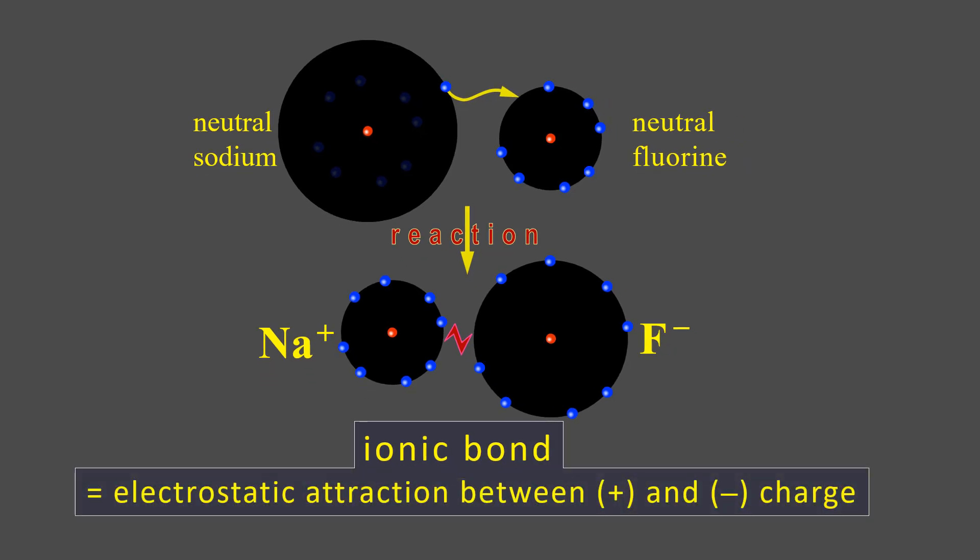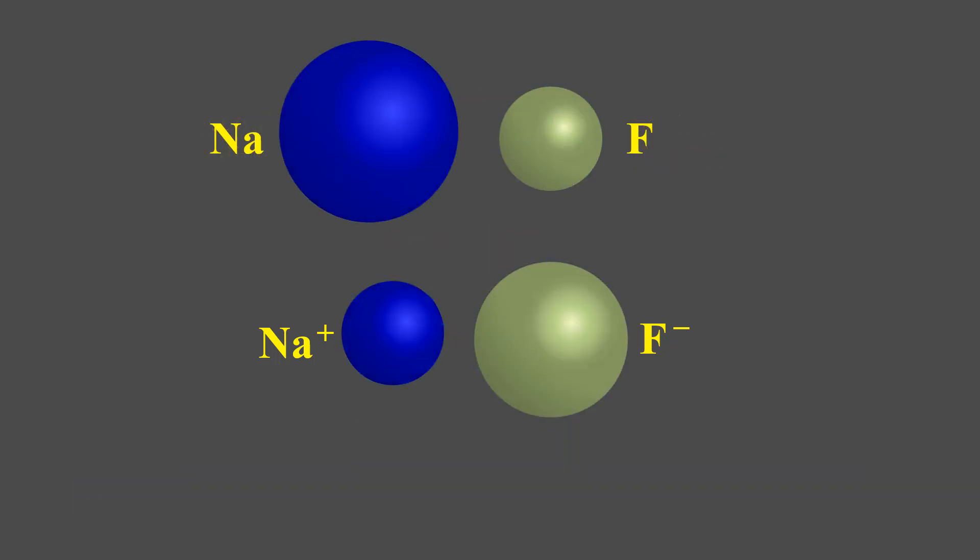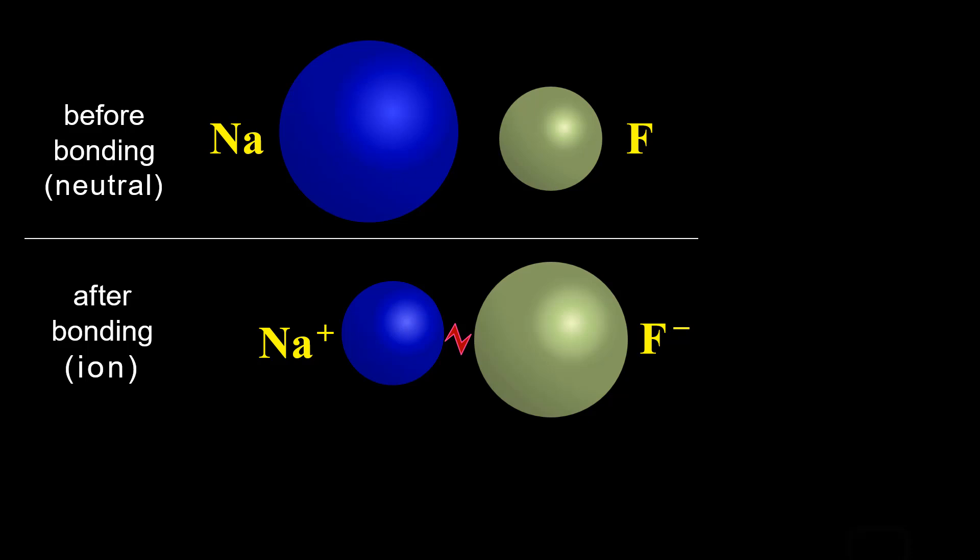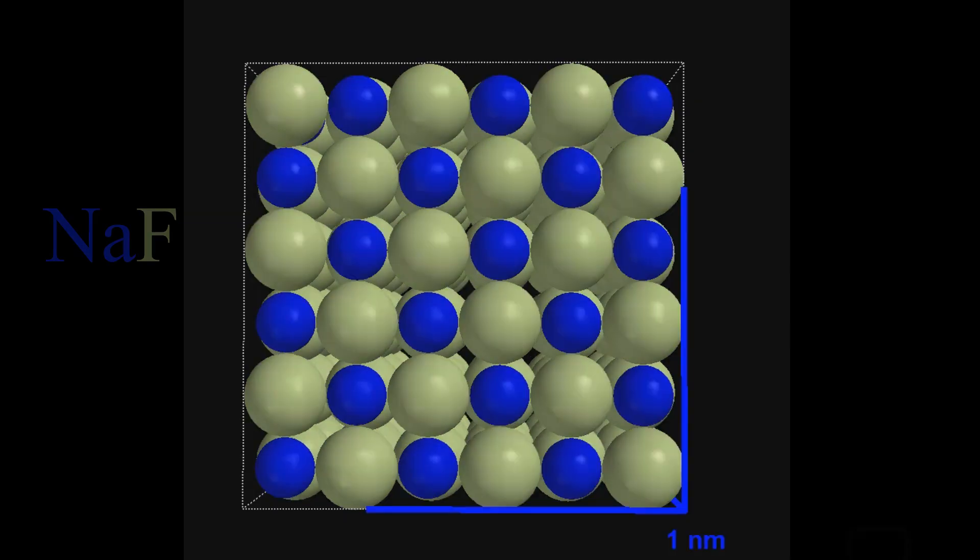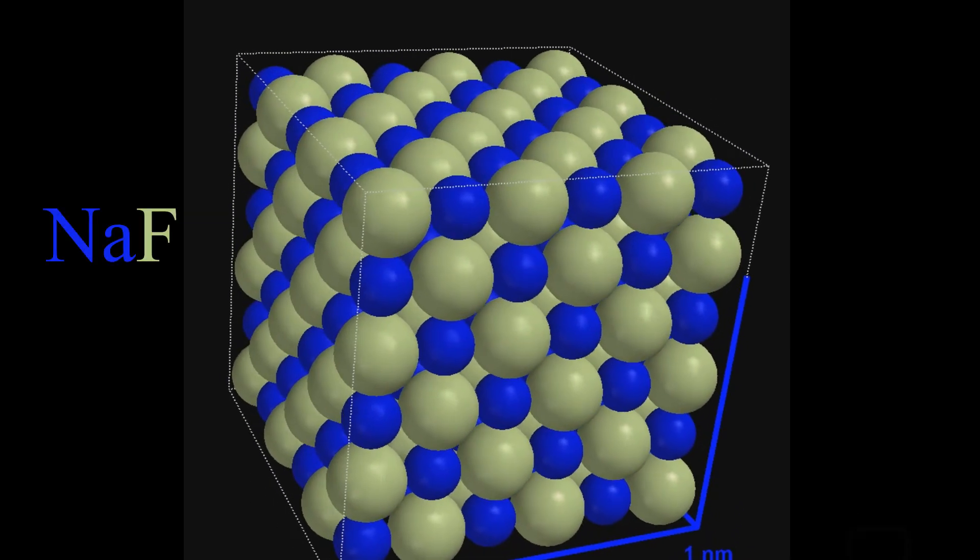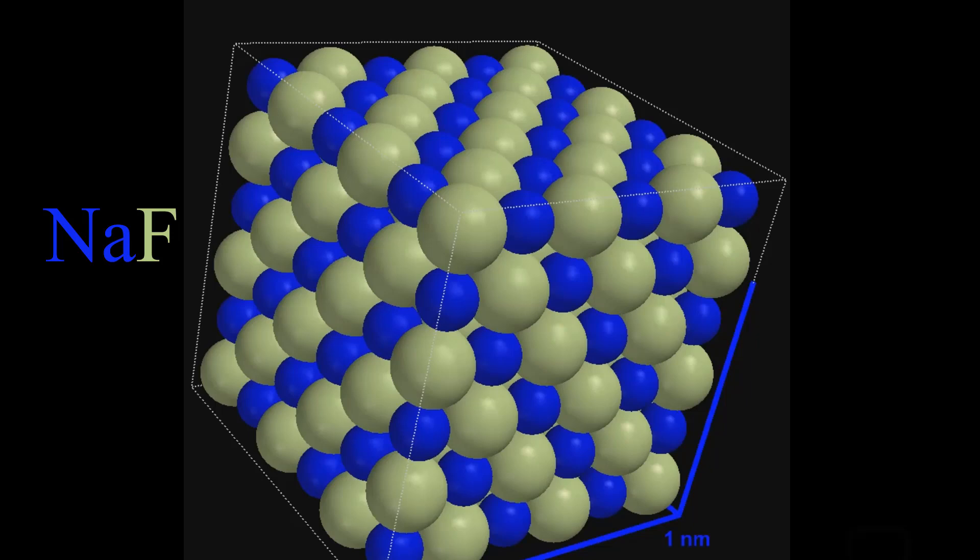To get a better understanding of the structure of ionic compounds, let's view the atoms and ions as simple spheres. The ionic compound does not exist as a diatomic molecule, as implied here, but as an ongoing array of alternating positive and negative charge, the organization of which is partly determined by the size and charge of each ion.